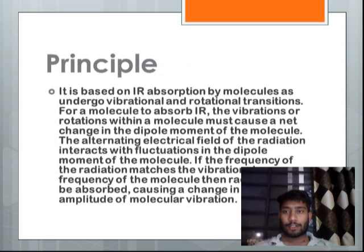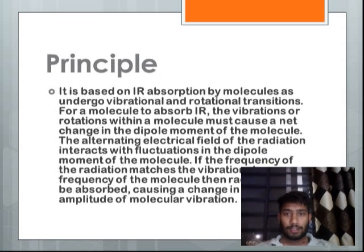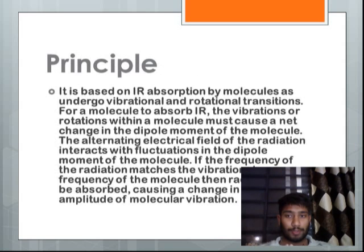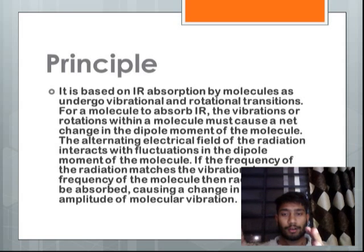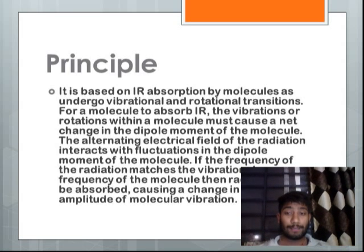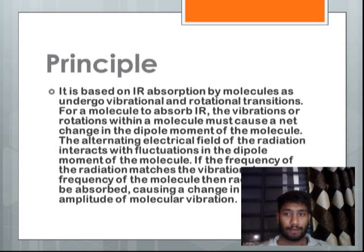IR spectroscopy is based on the principle of IR absorption. IR absorption is done by molecules which undergo vibrational and rotational transitions. For a molecule to absorb IR, the vibration or rotation within a molecule must cause a net change in the dipole moment of the molecule. Every molecule has a specific dipole moment, and whenever they absorb IR light, they perform a specific dipole movement. There is a sudden change in their dipole moment which is unique for every atom, every particle, and every substance.